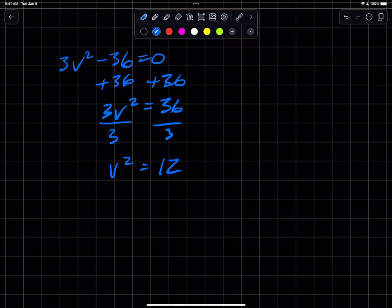Get v squared equals 36 divided by 3 is 12. And this is where the square root property comes into play. Square root, square root. I get v equals plus or minus the square root of 12.